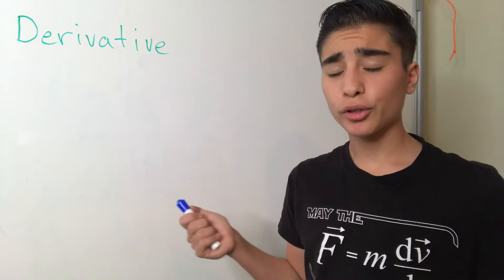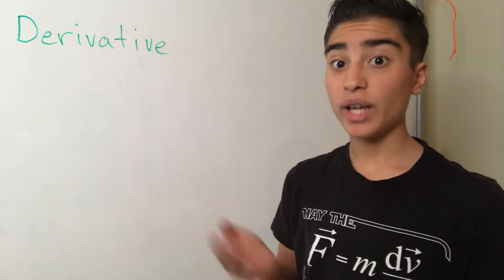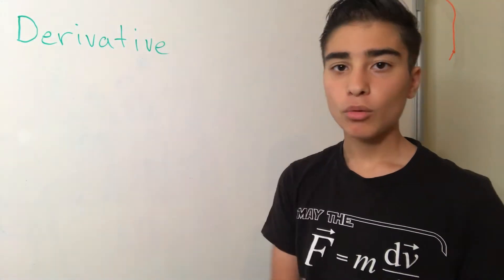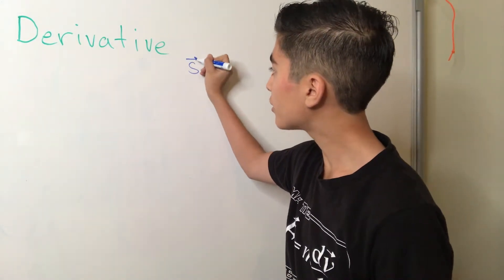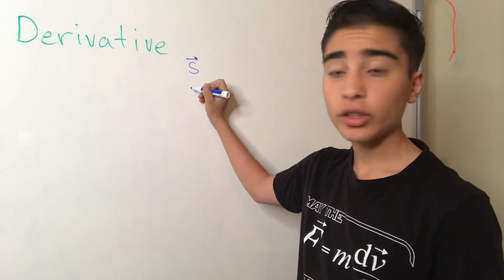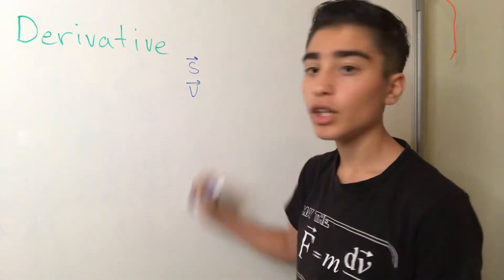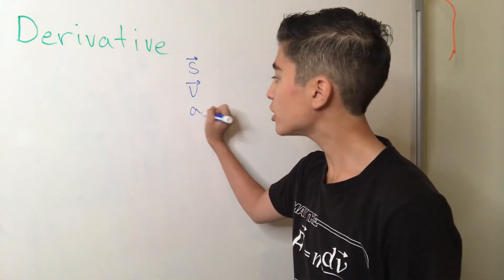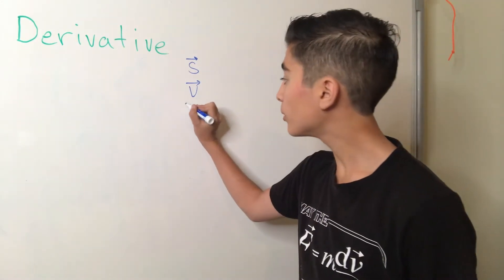So, now that we get the concept of the derivative, what does this have to do anything with physics? Well, in physics, distance is usually denoted by this term, s. This means displacement. Velocity is usually denoted by this term, v, which means velocity. And acceleration is usually denoted by this term, a.